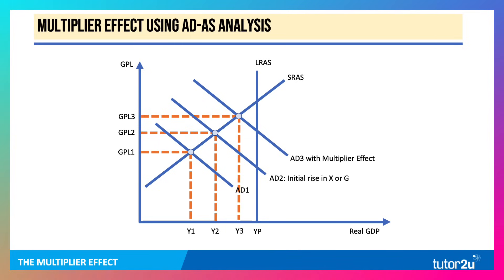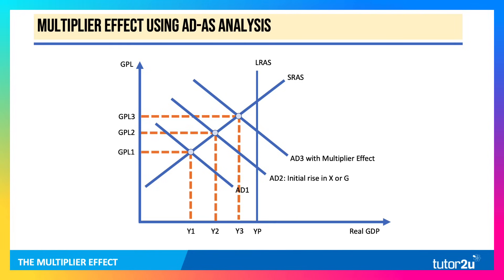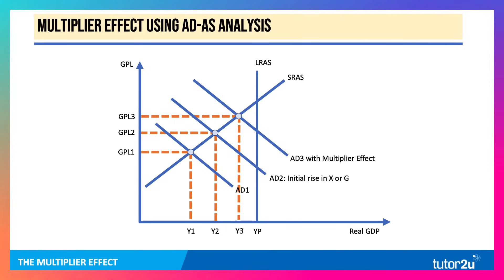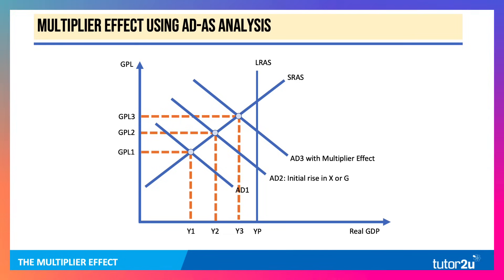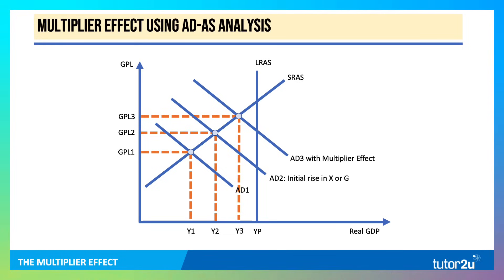This is the idea that the second and third round effects mean one person's spending is somebody else's income. So, for example, a £2 billion increase in government spending might lead to a final change in GDP of somewhere close to £2.5 or £3 billion because of the multiplier effect. It's just a simple use of ADAS analysis to illustrate that the final impact of a rise in G, a rise in exports, or investment can be bigger than the initial impetus.